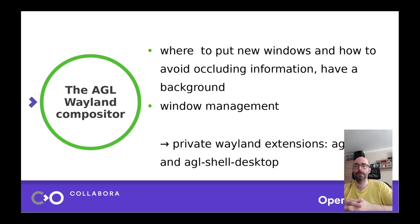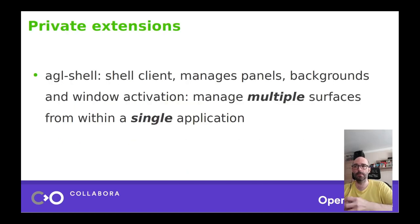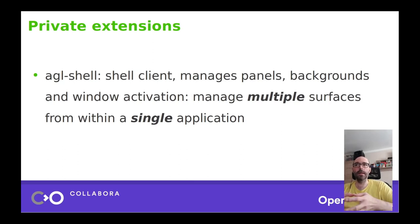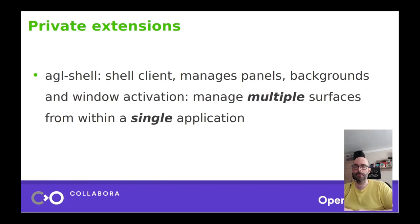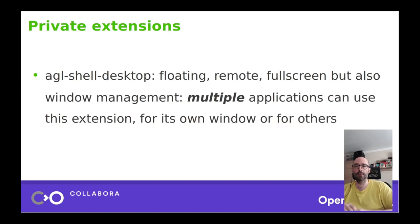We use two private extensions. One is called AGL shell and the other is called AGL shell desktop. The first one, AGL shell, is to manage panels, backgrounds and perform window activation. The client that implements this protocol ideally should be able to handle multiple top-level surfaces at the same time from within a single process, from within a single application. This is rather important because I'm going to get back to this when talking about runtimes and toolkits, and we're going to see that this is a bit problematic.